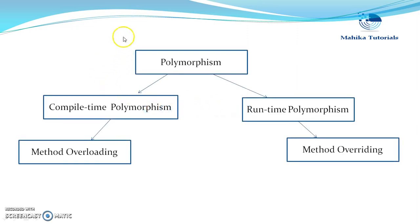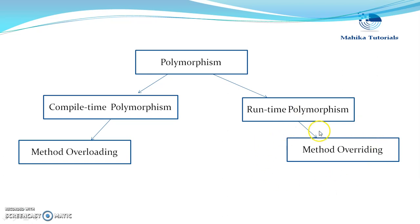Polymorphism is the ability to take multiple forms and it is of two types: compile time polymorphism and runtime polymorphism. We have seen an example of compile time polymorphism which is method overloading, and now we are going to discuss method overriding that leads to runtime polymorphism.